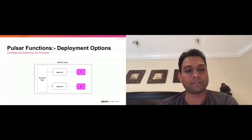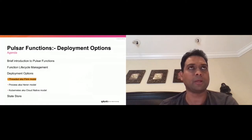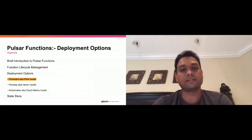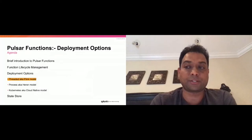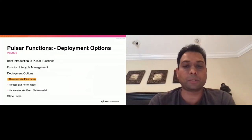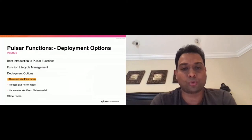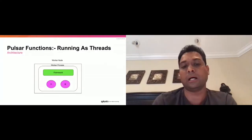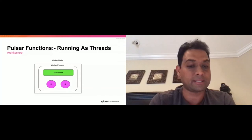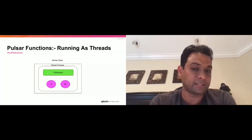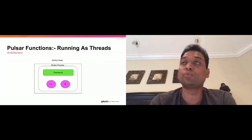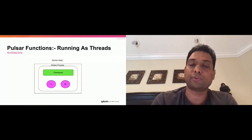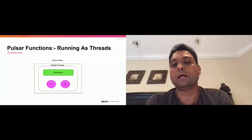Let's see what really happens when we say run functions as threads. Inside a worker node is a worker process. The worker process has a bunch of internal components — the framework — and this framework spawns functions F1 and F2 as individual threads. In this example, the worker node runs two functions, F1 and F2, which could be two instances of a function, and they are run as separate threads inside the worker process.